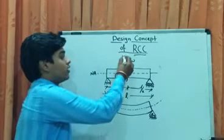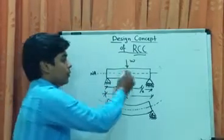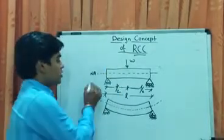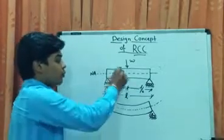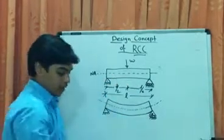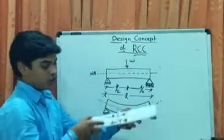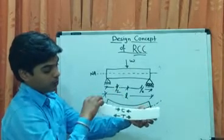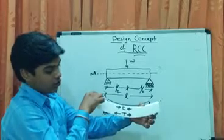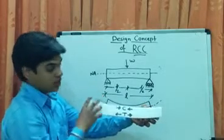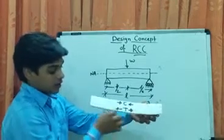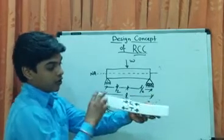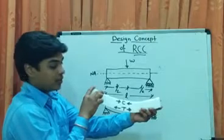Now, the design concept for RCC. Here, a simply supported beam is shown with a point load of intensity W. This is the neutral axis of the beam. Under the point load, the beam will deflect. I will show you with a short demonstration. Consider this as a beam. When you apply load on top, the beam deflects. The bottommost fiber of the beam expands, experiencing tension, while the uppermost fiber contracts, experiencing compression.